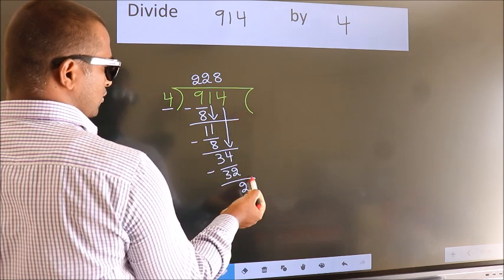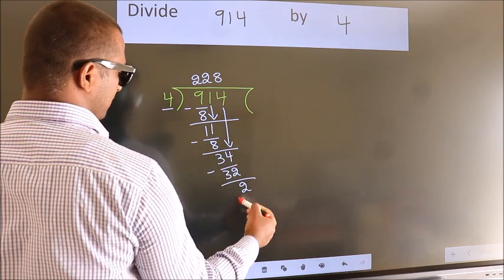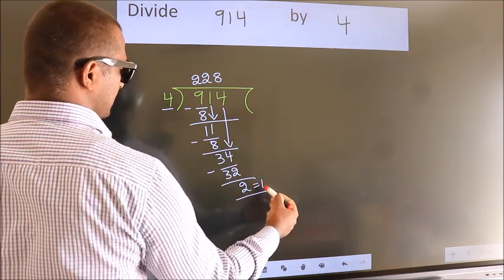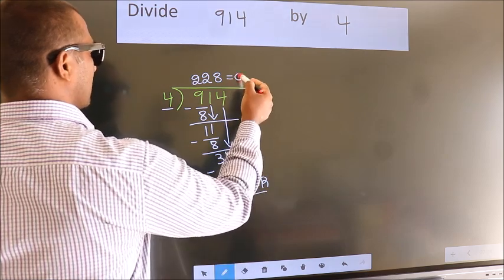No more numbers to bring it down. So, we stop here. This is our remainder. This is our quotient.